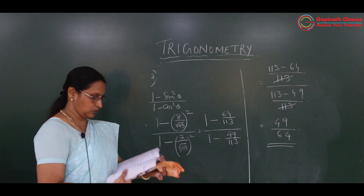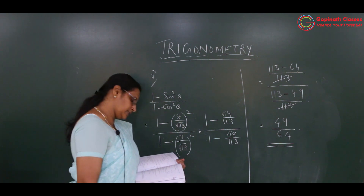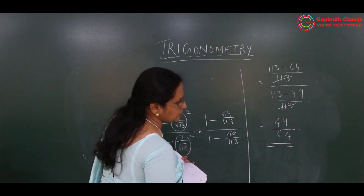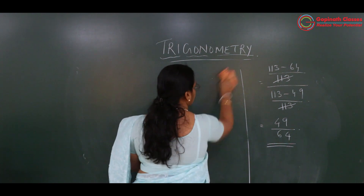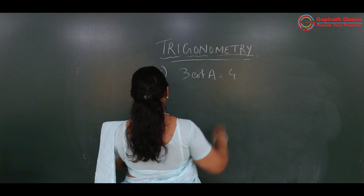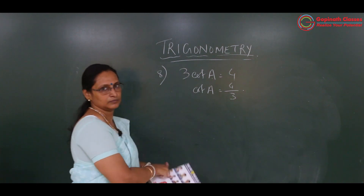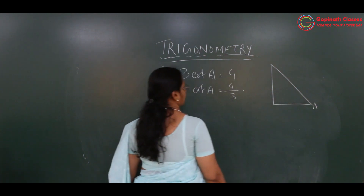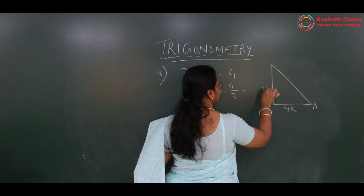Come to the 8th question. It is given 3 cot A equals 4, so obviously cot A will be 4 by 3. We need to check whether LHS equals RHS. Let's verify by giving the values. Cot A is 4 by 3, and cot is adjacent side by opposite side, so adjacent is 4k and opposite is 3k. Let me name this triangle ABC.